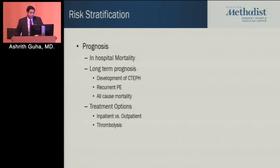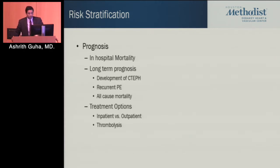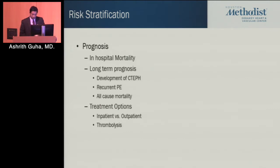Why is risk stratification in PE so important? It helps us determine prognosis — both in-hospital mortality and long-term prognosis in terms of whether patients go on to develop CTEPH, whether patients will have recurrent PE, and even all-cause mortality. More importantly, it helps us establish treatment options: whether a patient needs inpatient versus outpatient treatment, or whether somebody is a candidate for thrombolysis.